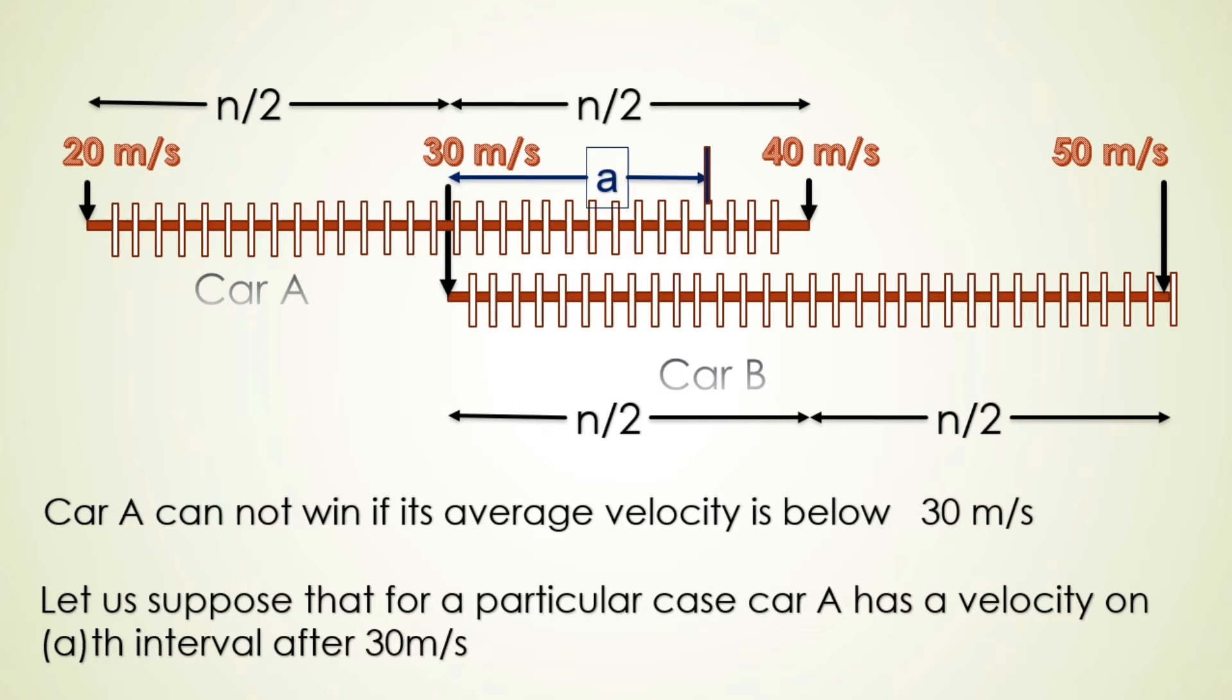We cannot acquire any speed below 30 m/s and it should not acquire any speed more than 'a'. There are no speeds other than the number of intervals, hence only 'a' cases are possible such that Car A can win if it is in the 'a'th interval.